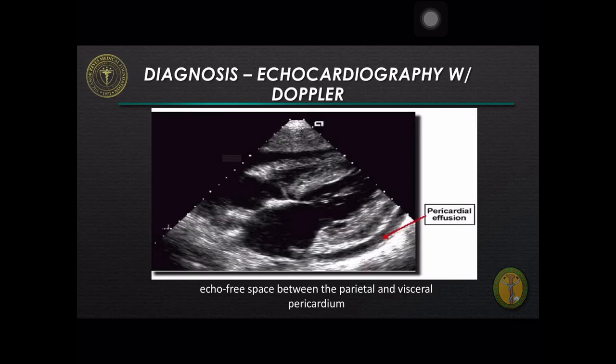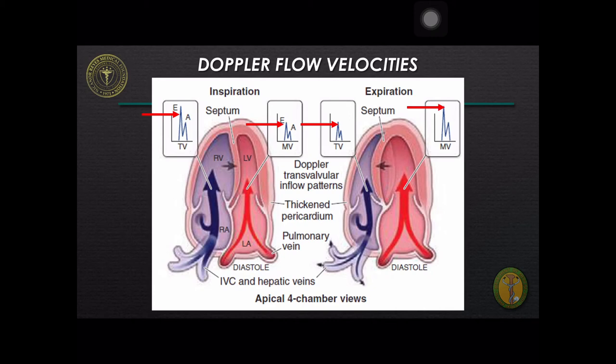This image shows a circumferential pericardial effusion. The arrow points to the echo-free space between the parietal and visceral pericardium. In the presence of cardiac tamponade, the Doppler ultrasound shows marked increase in the tricuspid and pulmonic valve velocities during inspiration, whereas the pulmonary vein, mitral, and aortic valve flow velocities diminish. During expiration, the opposite occurs.